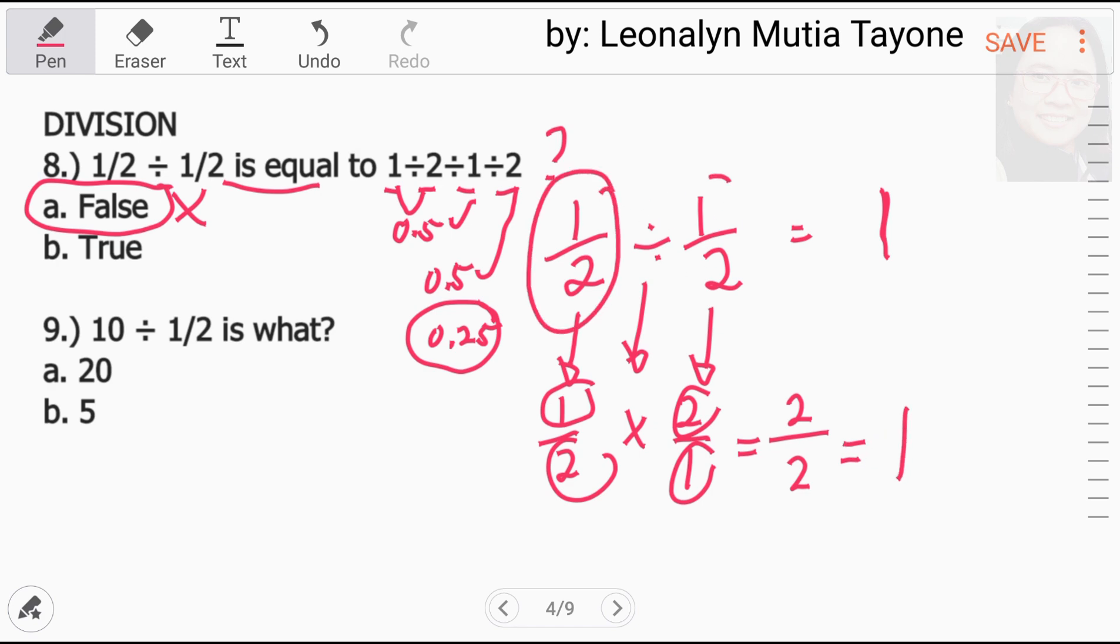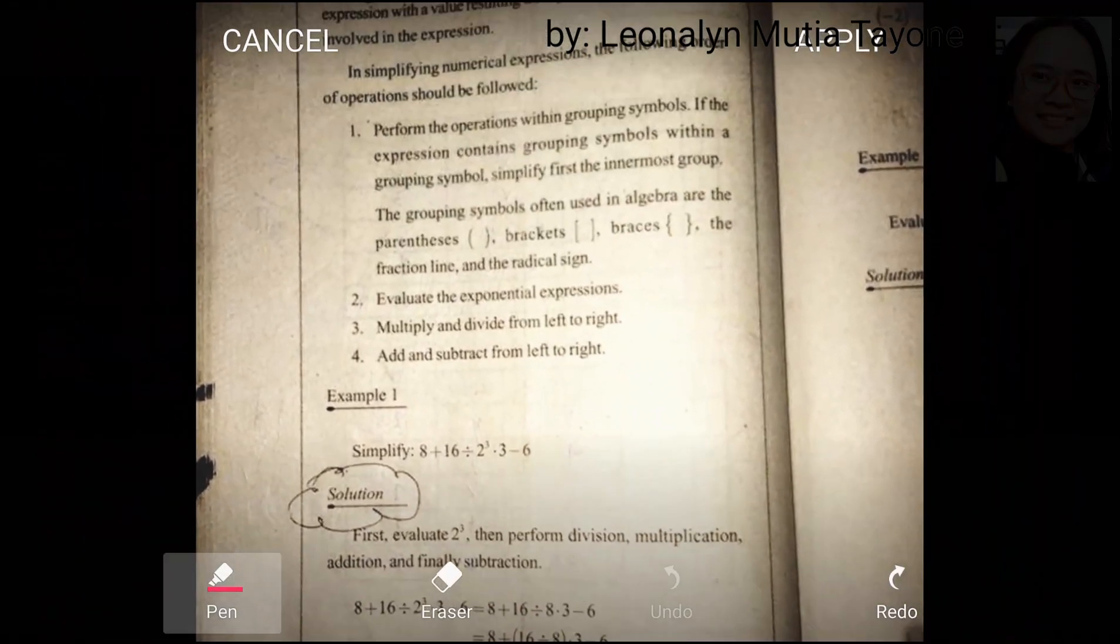So, ang sagot dito sa 1 half divided by 1 half equals 1 while ang 1 half, 1 divided by 2 equals 0.5 divided by 1 equals 0.5 divided by 2 that is 0.25. And 0.25 is not equal to 1. So, ang sagot dito sa number 8 ay false.